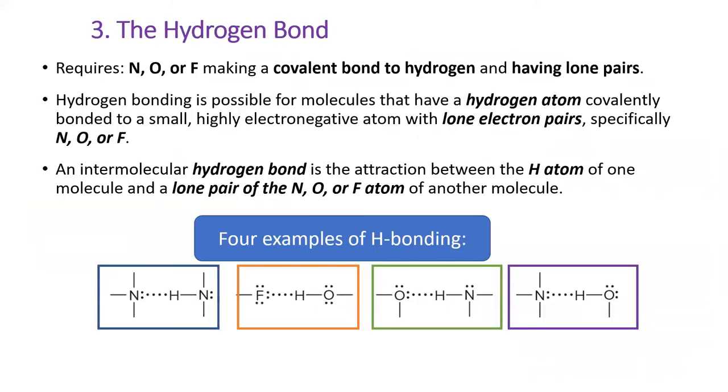A very special kind of IMF occurs when nitrogen, oxygen, or fluorine bond to a hydrogen atom. Because these three elements are more electronegative than hydrogen, they all pull electron density away from hydrogen, giving hydrogen a slight positive charge. When this slightly positively charged hydrogen is attracted to a lone pair on a neighboring molecule, a hydrogen bond forms.